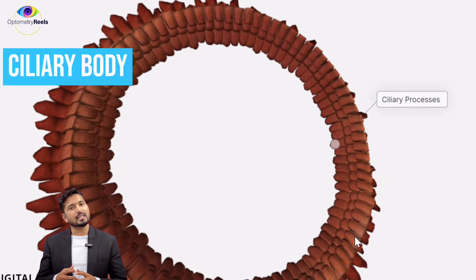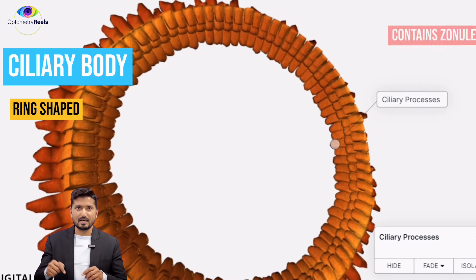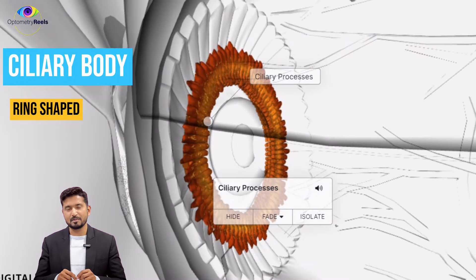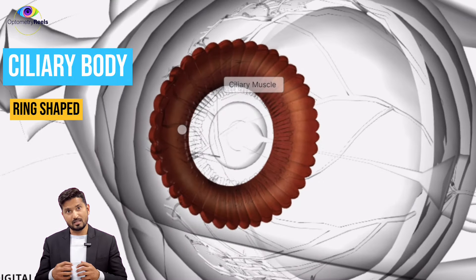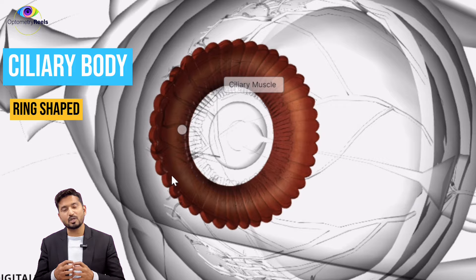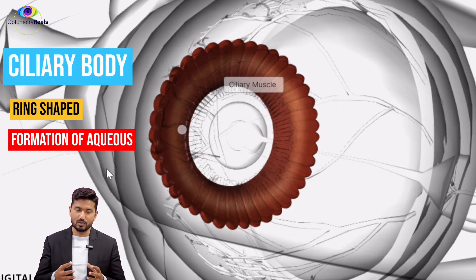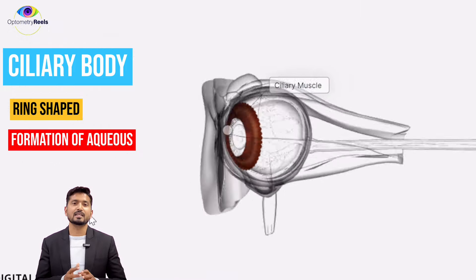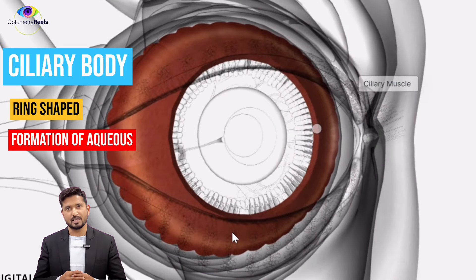The next structure is the ciliary body, which is ring-shaped and contains zonules, or suspensory ligaments, which hold the lens in place. The ciliary body is also responsible for the formation of the aqueous humor, which is a very important clear fluid in the anterior segment that maintains the intraocular pressure of the eye.